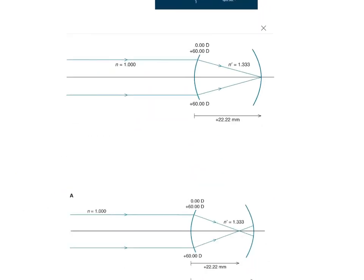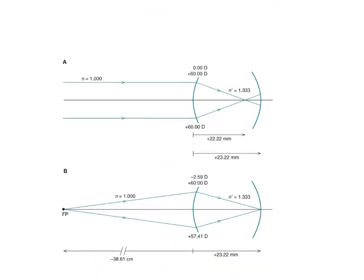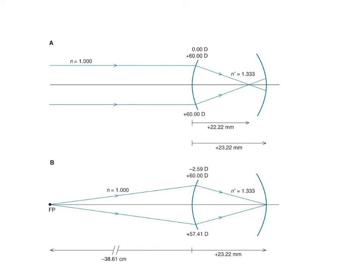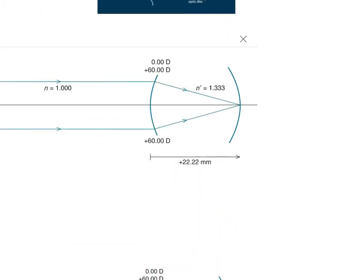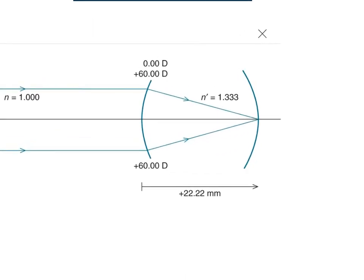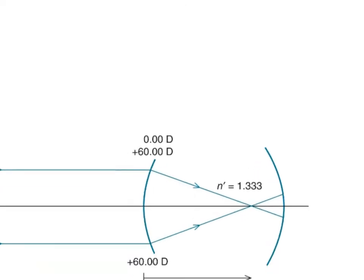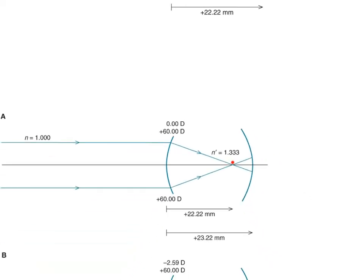In myopia, what happens is that light rays get refracted at the refracting surface and fall to a secondary focal point before the retina — not on the retina. In an emmetropic eye, where you have zero prescription, the focal point falls right on the retina. In myopia, it's focused before the retina, so you experience blur.